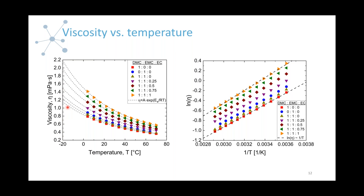Such accurate measurements are more difficult to obtain with cone-and-plate or other rotational geometries at these low viscosities. The dashed lines shown are Arrhenius fits, which fit the data well for this temperature range, as also seen in the rescaled plot. Having precise measurements over this temperature range allows you to extrapolate viscosity with confidence to more extreme temperatures relevant to battery applications, such as minus 20°C.